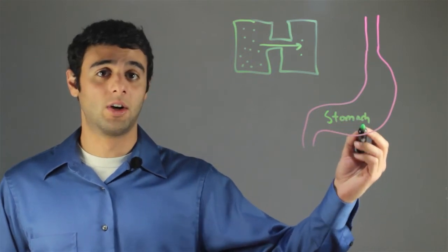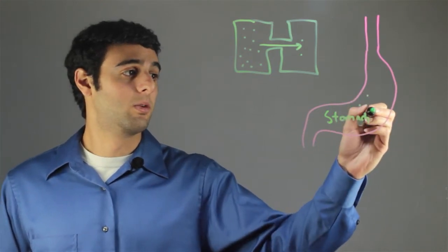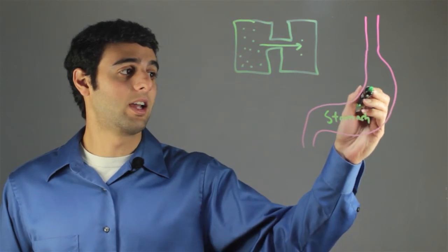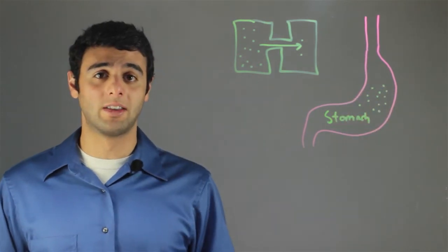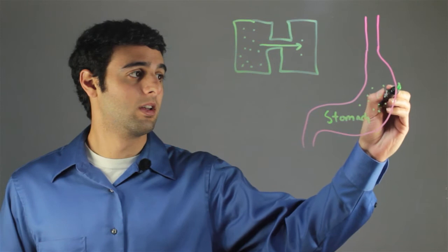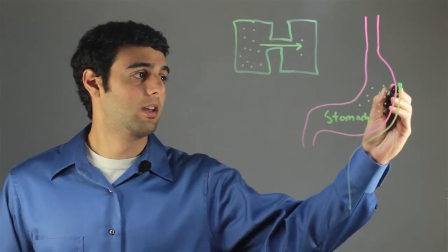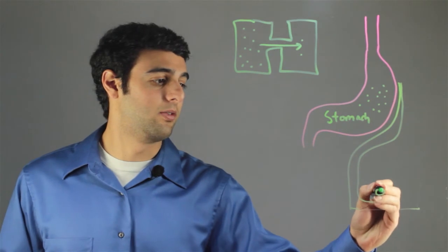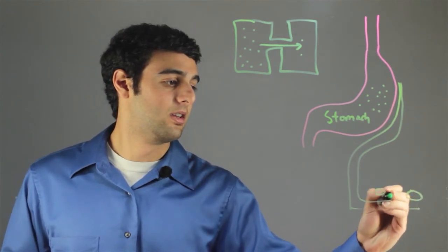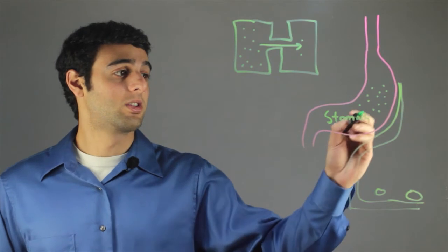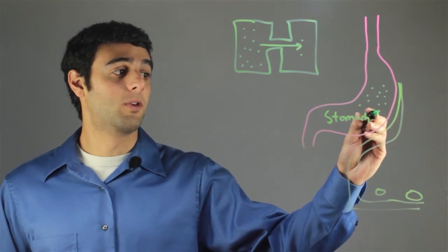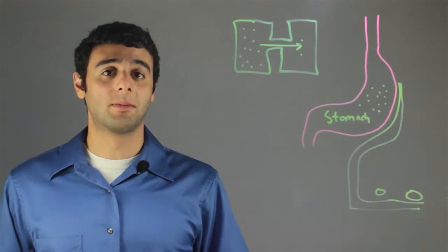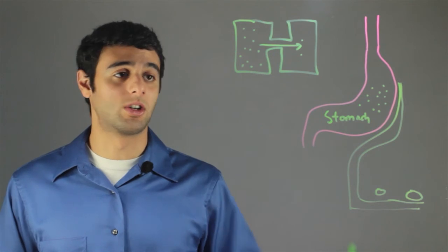We have the stomach. When we eat food, we have a high concentration of nutrients in the stomach. This is our bloodstream going to different cells in the body. Before we eat, our bloodstream has a very low concentration of nutrients.